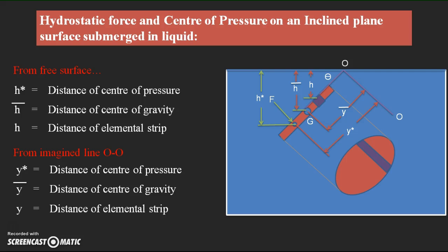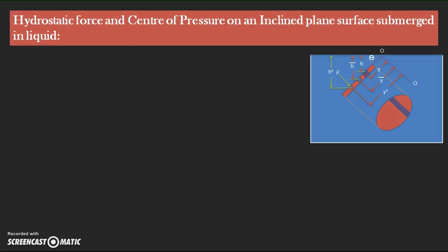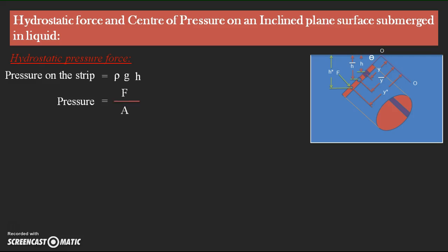With reference to these elements, we can derive the equation for hydrostatic pressure force and center of pressure. First, we find the hydrostatic pressure force. The pressure on the elemental strip from the free surface is given by the hydrostatic law as ρGH. Since pressure equals force divided by area, the elemental force dF on the strip equals pressure times elemental area dA.